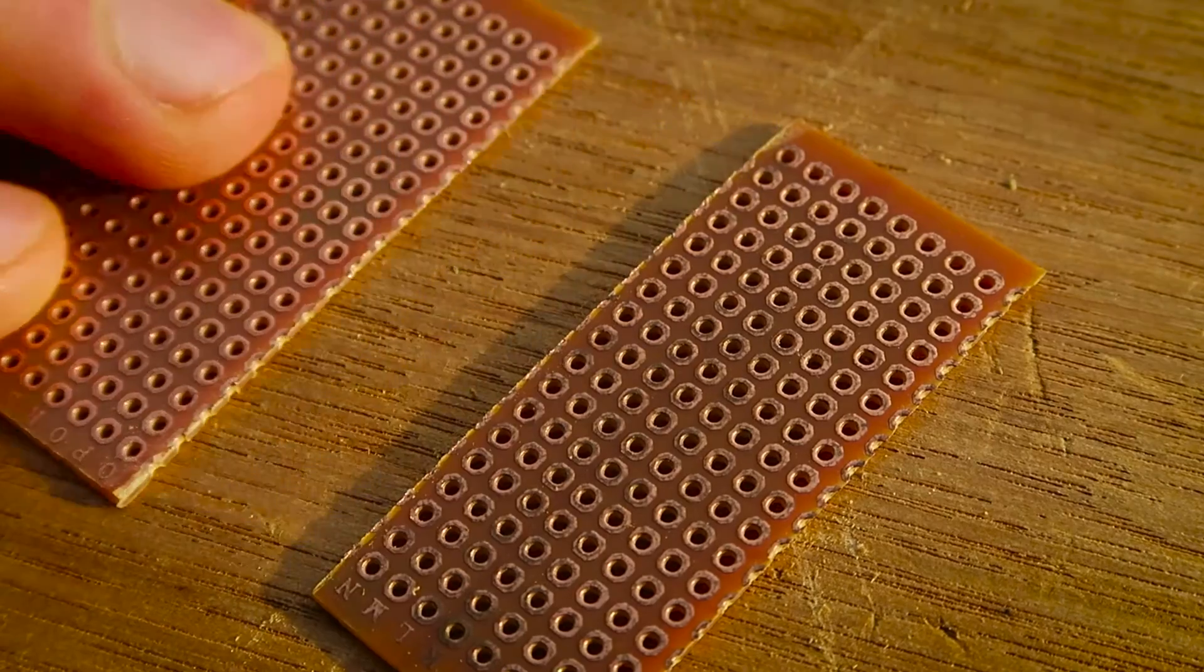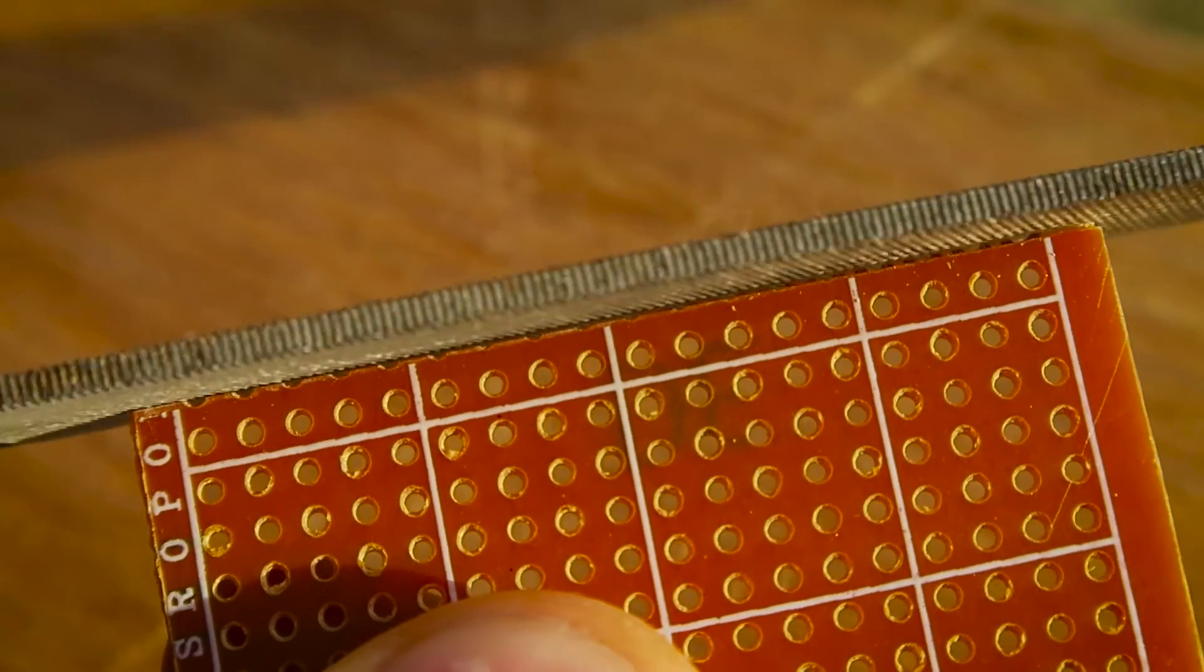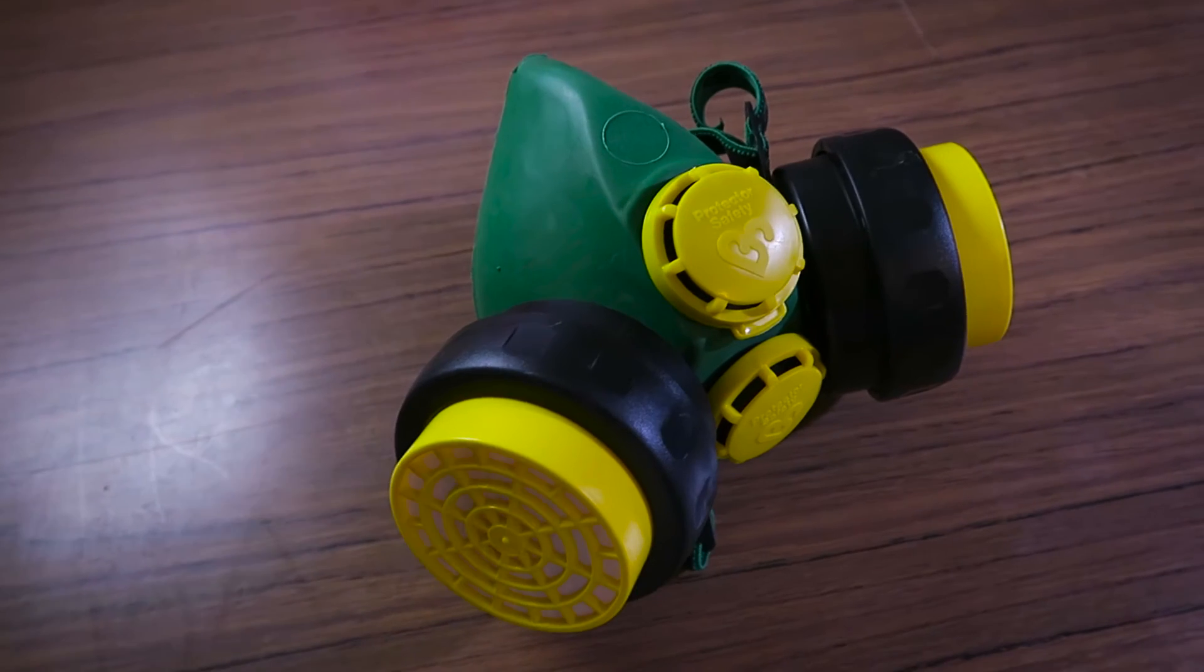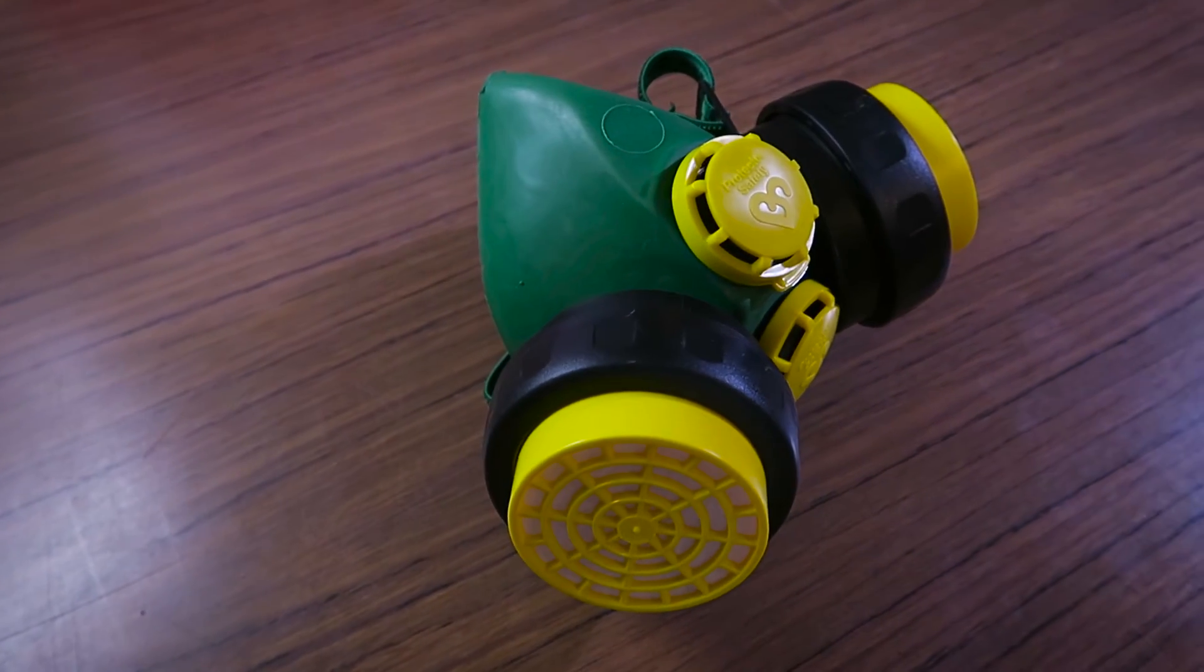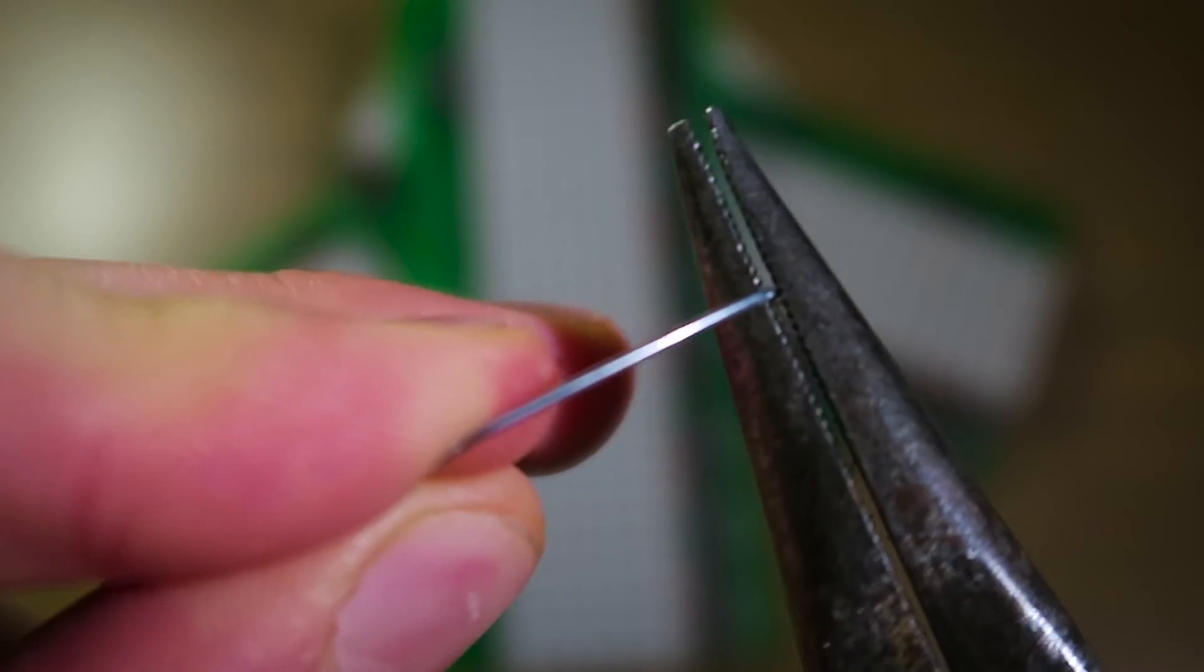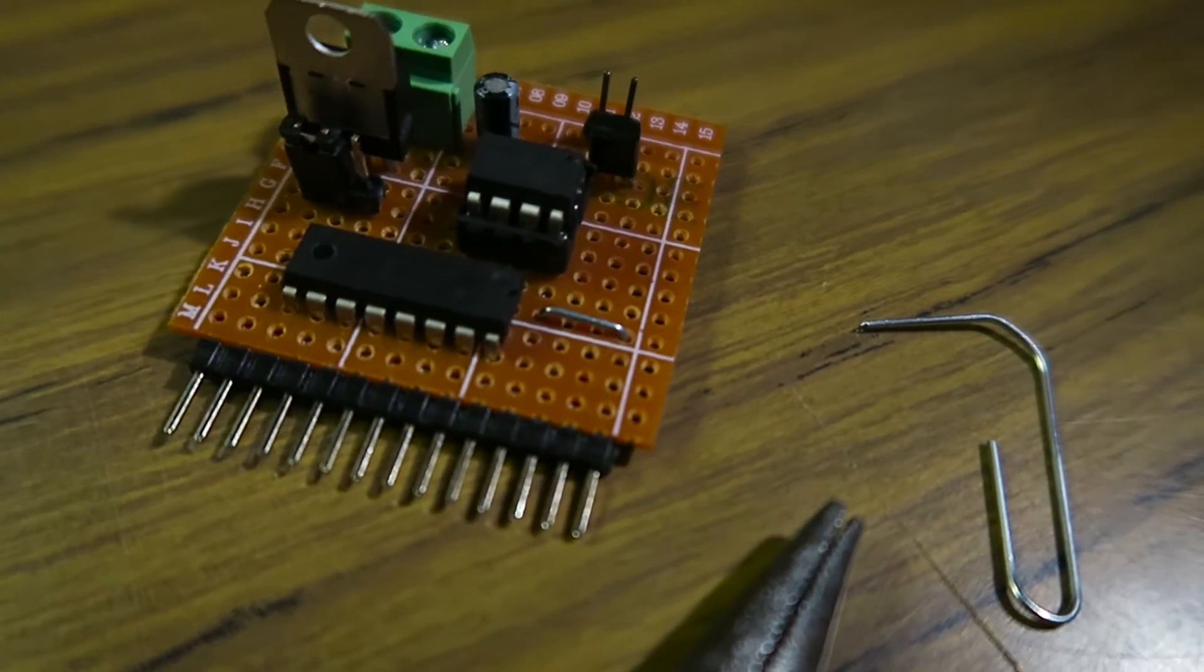I then cut the board to size and filed down the rough edges. The board smells like it's made of compressed toxic waste, so I used a mask when doing this. I couldn't fit the entire design on a single side, so I soldered a piece of paper clip as a jumper.